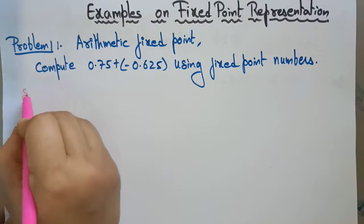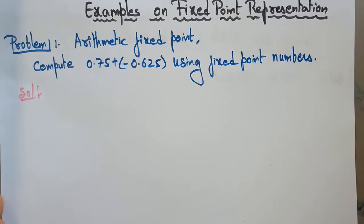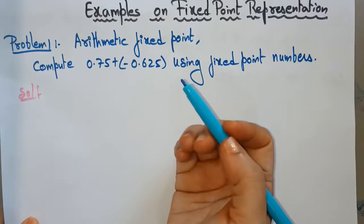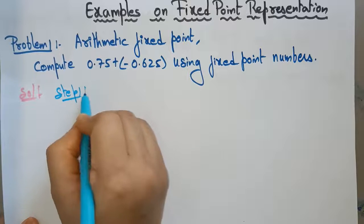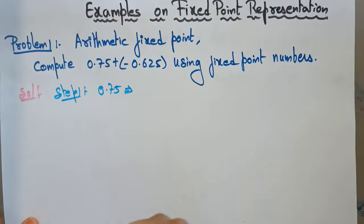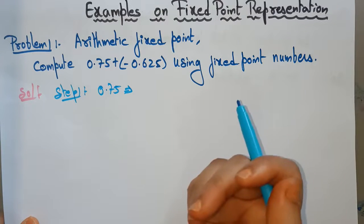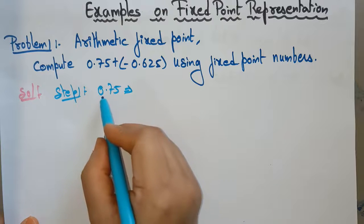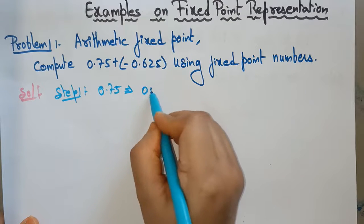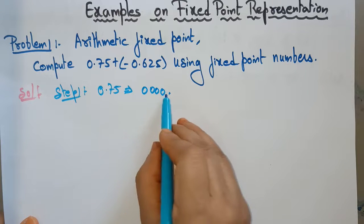Now let's work on it step by step. First, follow the step-by-step procedure for calculating arithmetic fixed point. Divide whatever the question gives into terms and calculate each. First, I am taking 0.75. To convert this decimal number into binary, divide the integer part and the fraction part. The integer part is all zeros. I am using an 8-bit representation, so I have taken 4 zeros for the integer part.